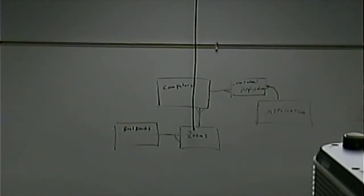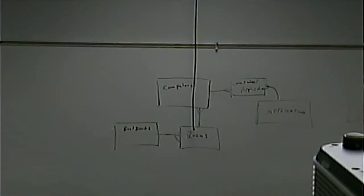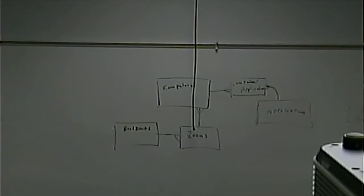Now let's start putting attributes in. There's a special attribute called the primary key - every table has to have one. The primary key uniquely identifies rows in that table, members of that entity. Unique literally means there's only one - people in general conversation misuse the word unique when they really mean rare. Unique means there is only one.